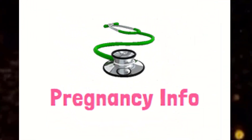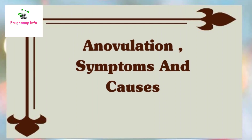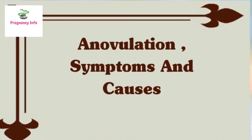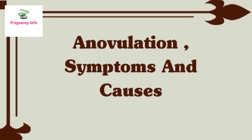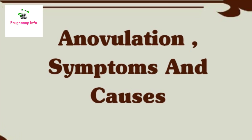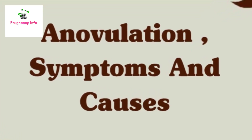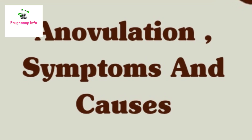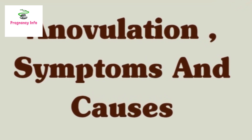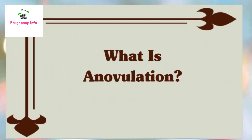Hello and welcome to Pregnancy Info. Today we will discuss the topic of anovulation — its causes, its symptoms, and treatment. Anovulation is a common cause of infertility. It's caused by a hormonal imbalance, and the main sign of it is having irregular periods. Anovulation can often be treated by lifestyle changes and/or medication.